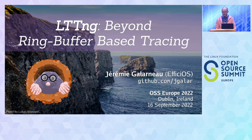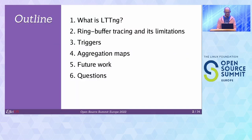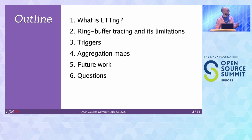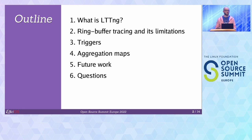This talk is about new features in LTTNG and how we're starting to move beyond ring buffer tracing. I'm going to start with a brief introduction of LTTNG, the project itself. Then I'll talk about ring buffer tracing and its limitations, and then go into new features — triggers and aggregation maps — and then touch on some future work and take your questions.